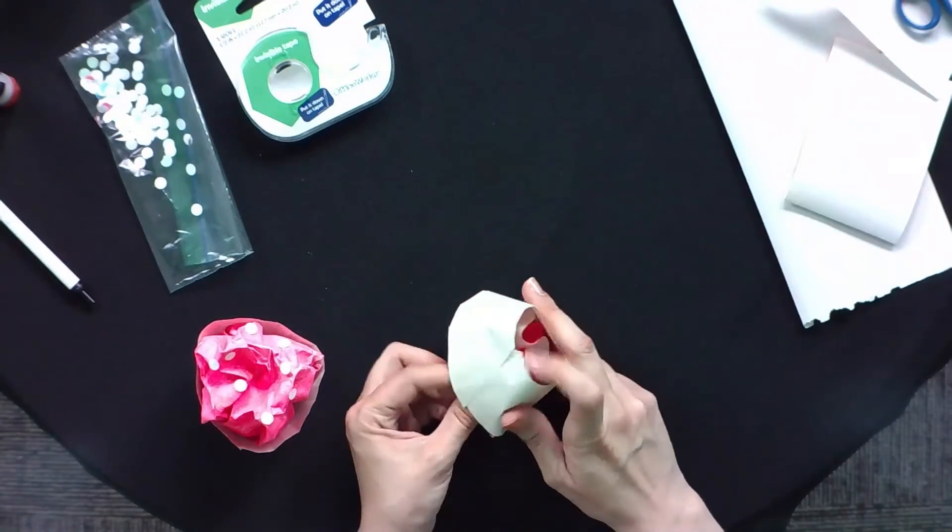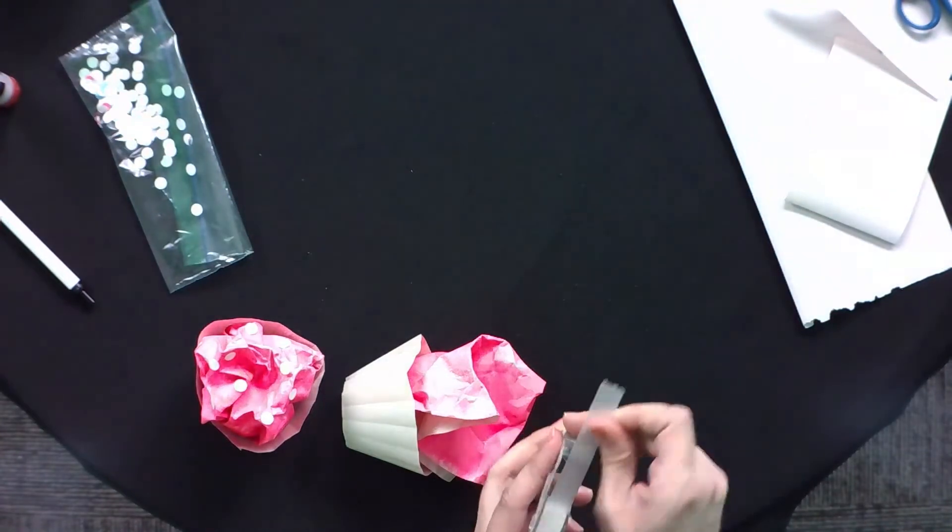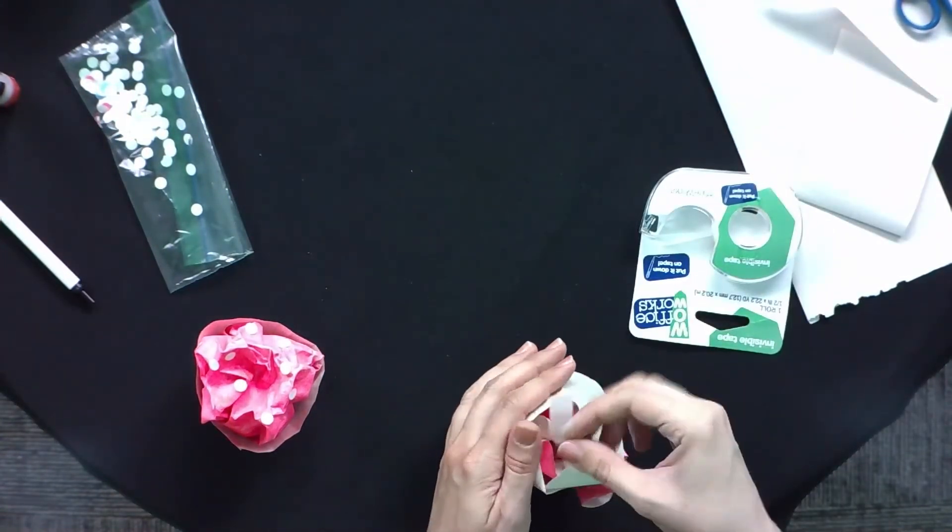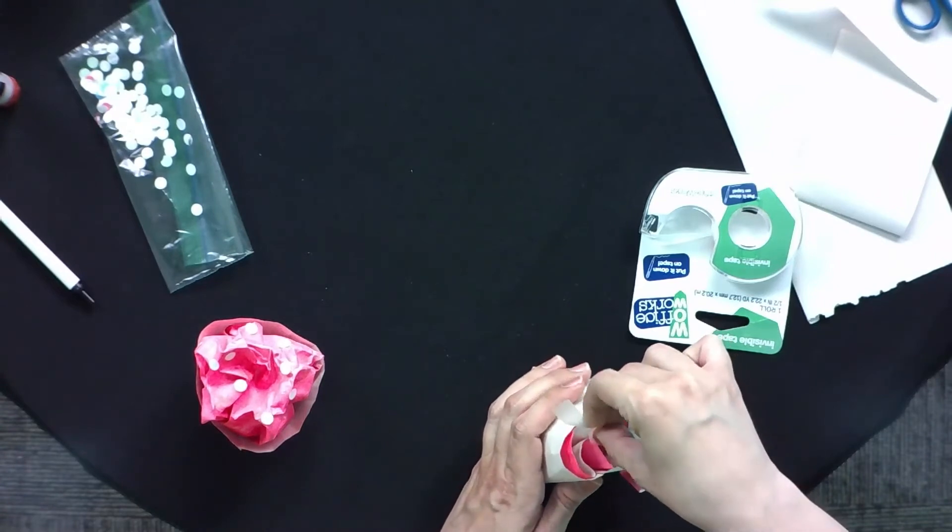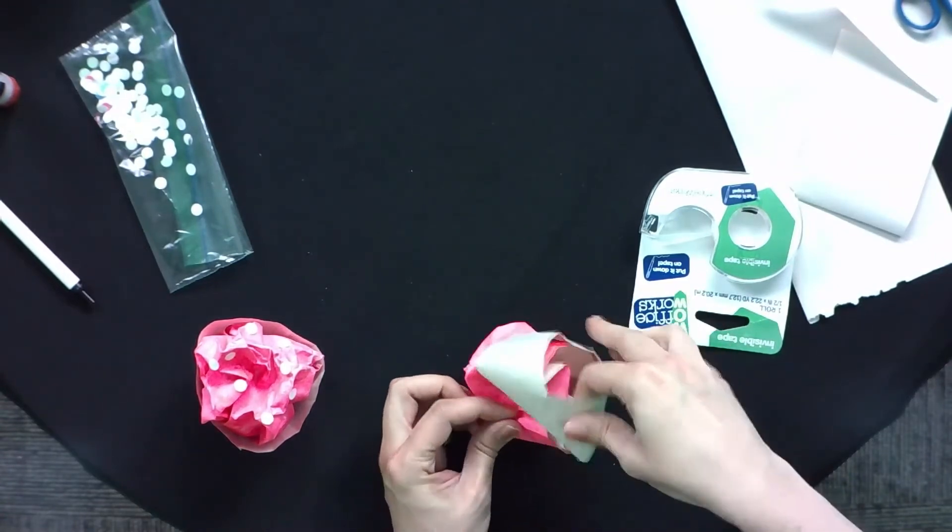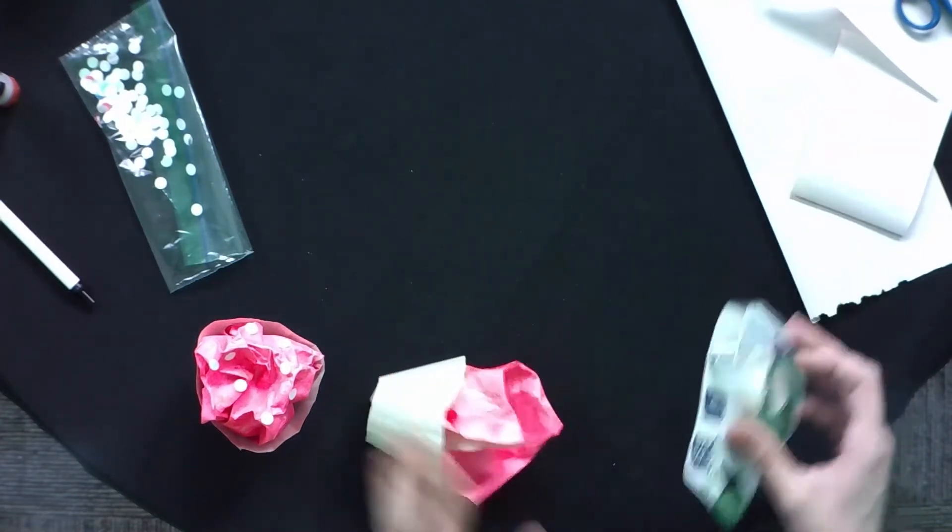Now remember how I said you want the bottom part to be open. So what you're going to do is take your tape. You are going to tape some of those edges down from the inside like this. See that? You're just going to go around and do that as much as you feel you need for your cupcake.